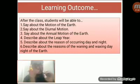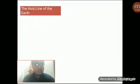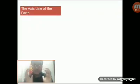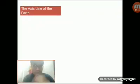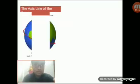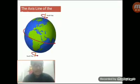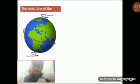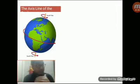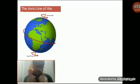Dear students, let's get started with our today's class. At first, I am going to talk about the axis line of the earth. I am going to show a picture to you. This is the picture of the axis line. Basically, the axis line is an imaginary line at the north to south over the center of the earth on which the earth turns itself.